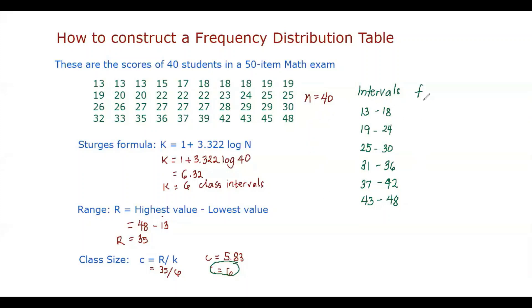And then we're going to count the number of observations in each interval. So for the first interval, we can make a tally, we can count. But since our observations are already in increasing order, it's easier for us to count. So from 13 to 18, there are 8 observations.